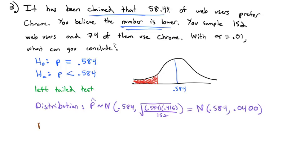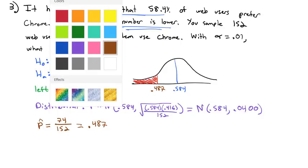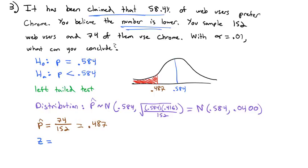We're going to compare it to the p-hat we get from our sample. Our sample said 74 out of 152 use Chrome, which is 0.487. That's the value off to the left. Is that far enough away to conclude it's actually less than 0.584? To find out, we calculate our z value: 0.487 minus the hypothesized proportion of 0.584 divided by the standard error of 0.0400. Our z value is negative 2.43.